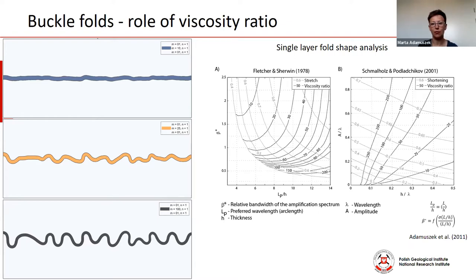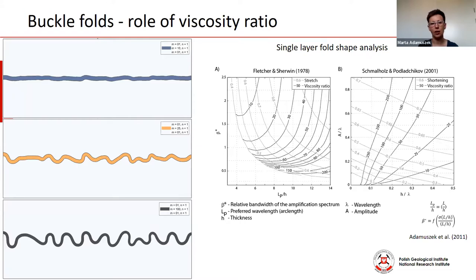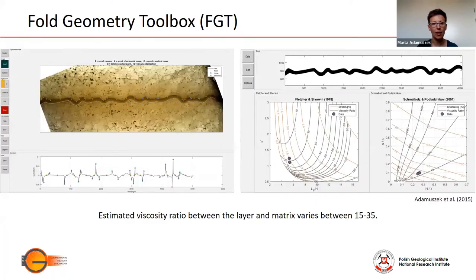How to interpret the viscosity ratio from such fold shapes? For the case of single-layer folds with large amplitude, we have basically two methods that are commonly employed: the first developed by Fletcher and Sherwin, whereas the second is developed by Schmalholtz and Podlachico. In both methods, we need to measure four basic fold shape parameters: arc length, wavelength, amplitude, and thickness. For that, we use a fold geometry toolbox — an open source tool that allows for quick digitization and analysis of these required parameters.